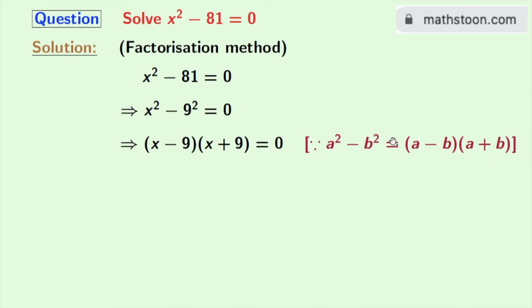Applying this formula, we get x square minus 9 square equals x minus 9 times x plus 9 equals 0.